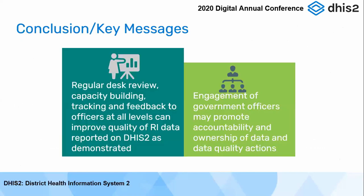To conclude: regular DQR review, capacity building, tracking, and providing feedback to officers at the sub-national level can actually improve the quality of routine immunization data, as well as other health program data. We need to keep tracking and provide detailed and specific feedback to health officers at the sub-national level. Engagement of government officers can also promote accountability and ownership of data. Even though this intervention stopped at March 2020, because we had involved officers from the government level, we are still continuing this process, and we know that the feedback is still being provided to sub-national level. Over time, we will still get to the expected values for each of these indicators.